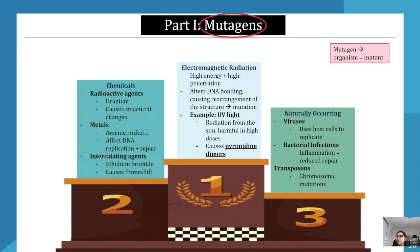We're starting off by looking at module six. The first dot point of module six is asking us to look at mutagens — what are the different types of mutagens and what mutations do they cause? That's the first big point: what are mutagens?